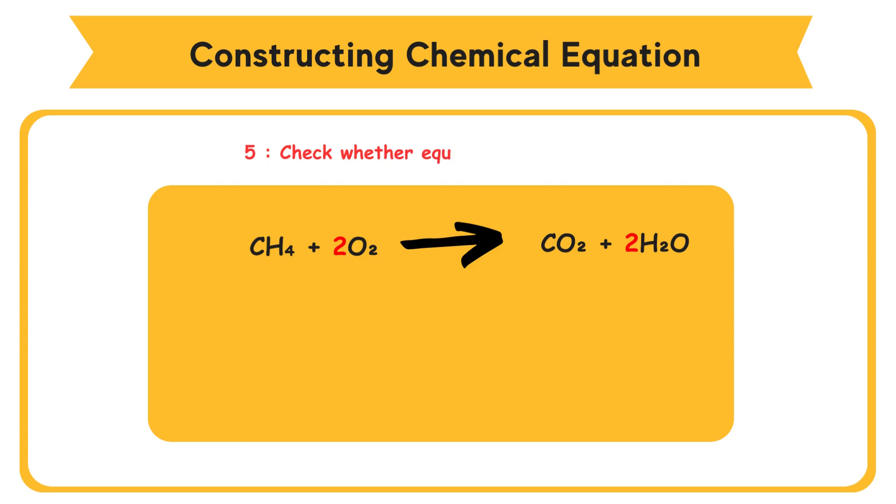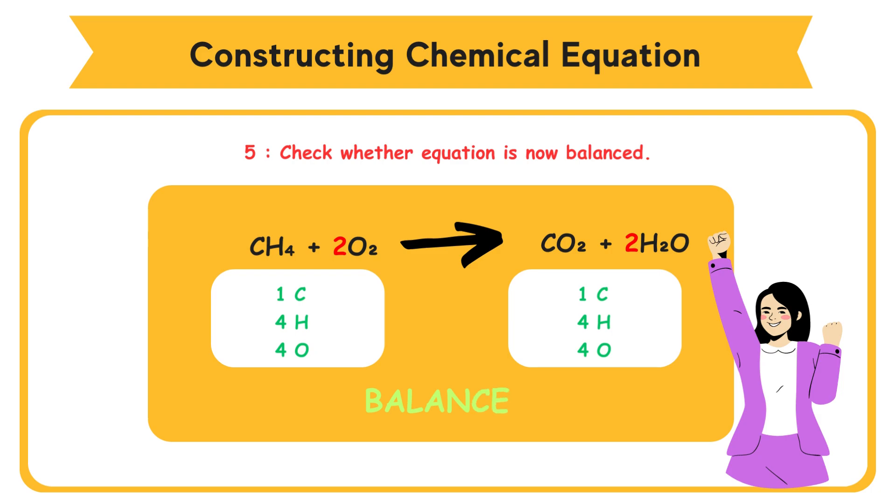Step 5: Check whether equation is now balanced. Left-hand side and right-hand side: 1 carbon atom, 4 hydrogen atoms, 4 oxygen atoms. The numbers of atoms are balanced.